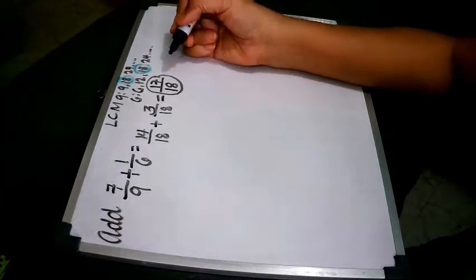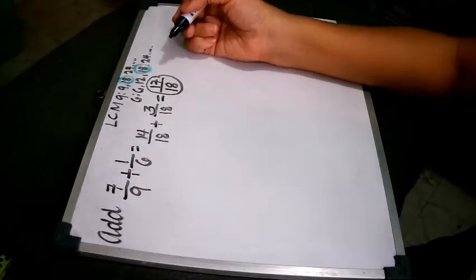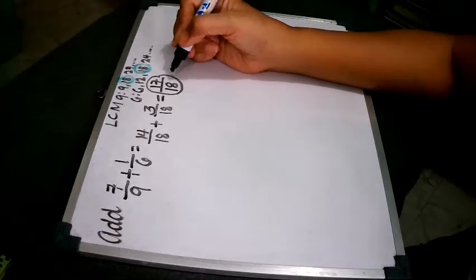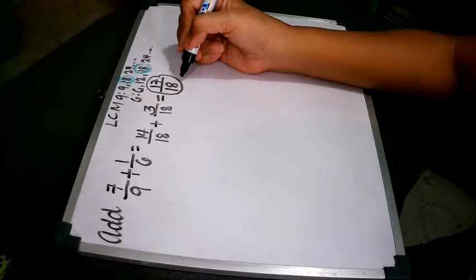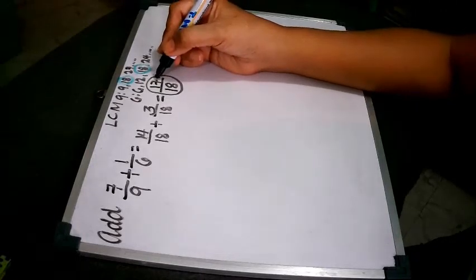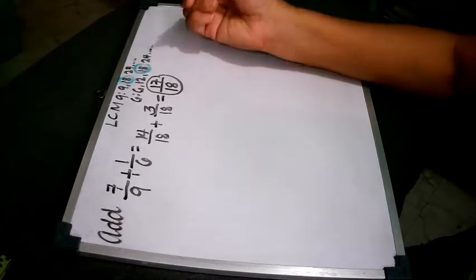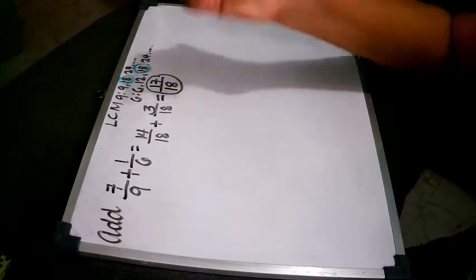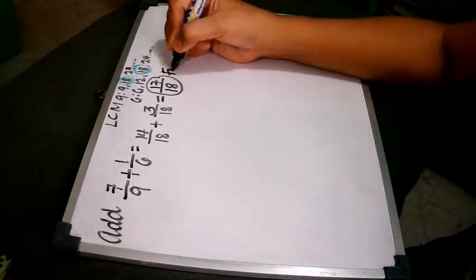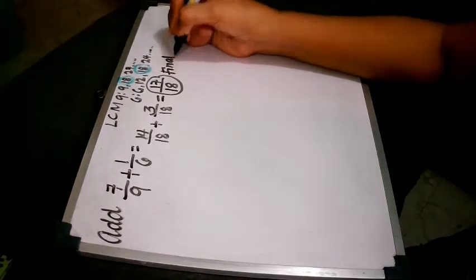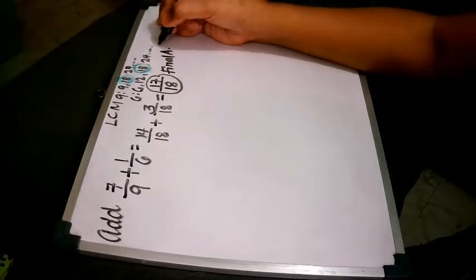And then look closely if this is in the simplest or lowest term or simplest form. 17 over 18. This is a prime number. Meaning to say we have nothing to do with this. This is already the simplest form. So this is the final answer already. No need to reduce it to its lowest term.